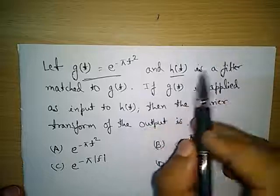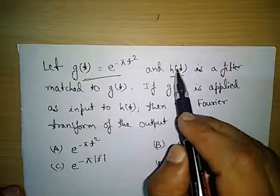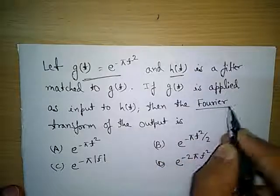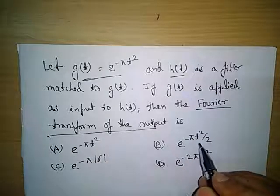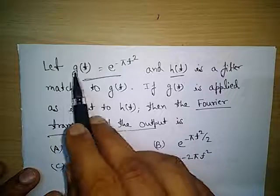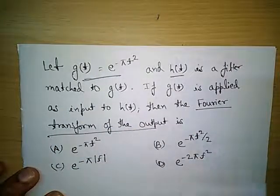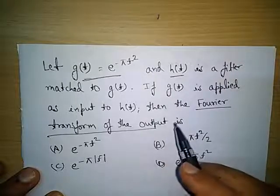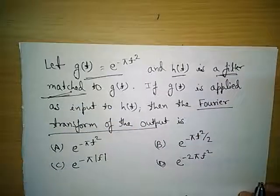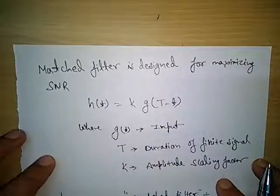Here we can see this is the input signal that is given, and one matched filter we have to design that is matched to g(t). The overall output combination will be the convolution of these two signals, and we have to determine the Fourier transform of the output. We can take the question in the frequency domain — it will be easy to multiply the Fourier transforms. But before solving the problem, we will try to understand the meaning of matched filter.